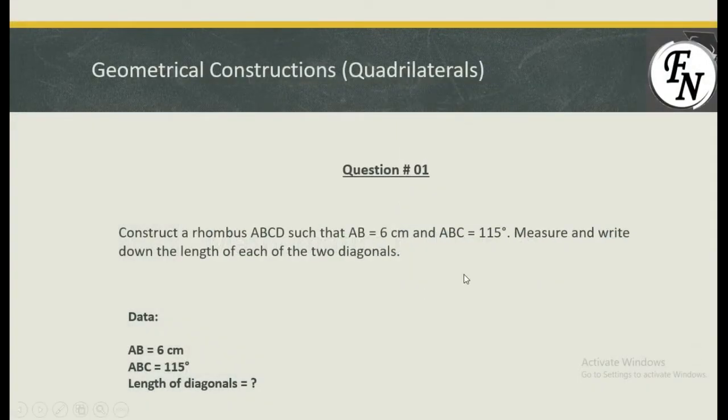Here's the question: construct a rhombus A, B, C, D such that AB is 6 cm and angle ABC is 115 degrees.